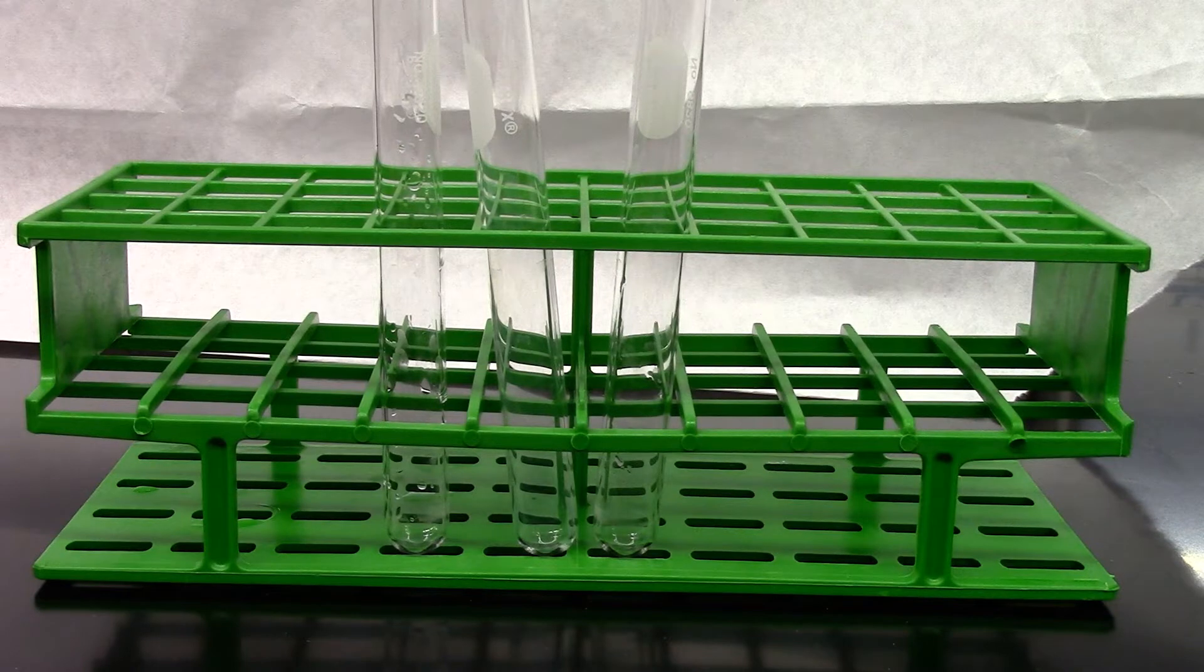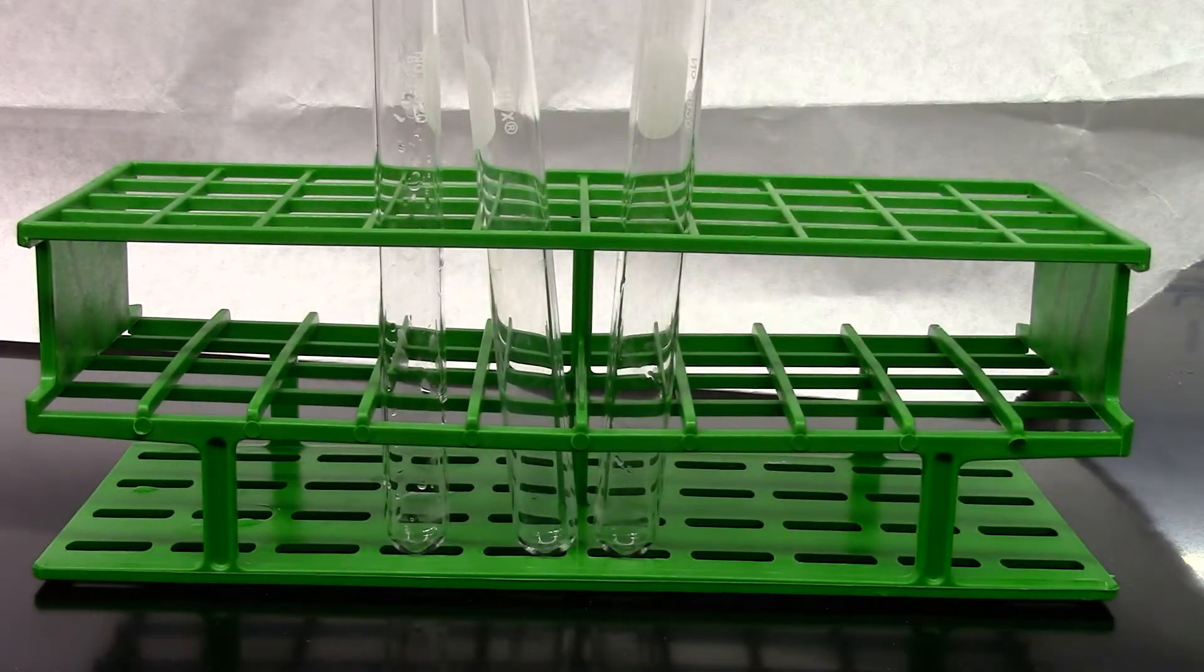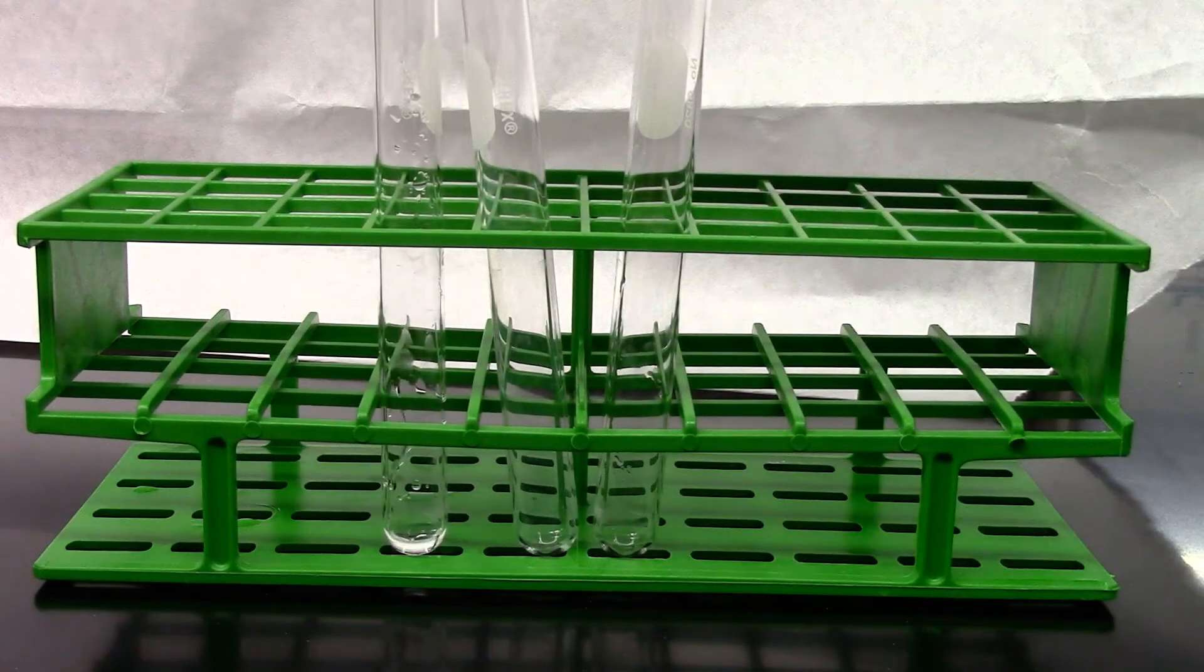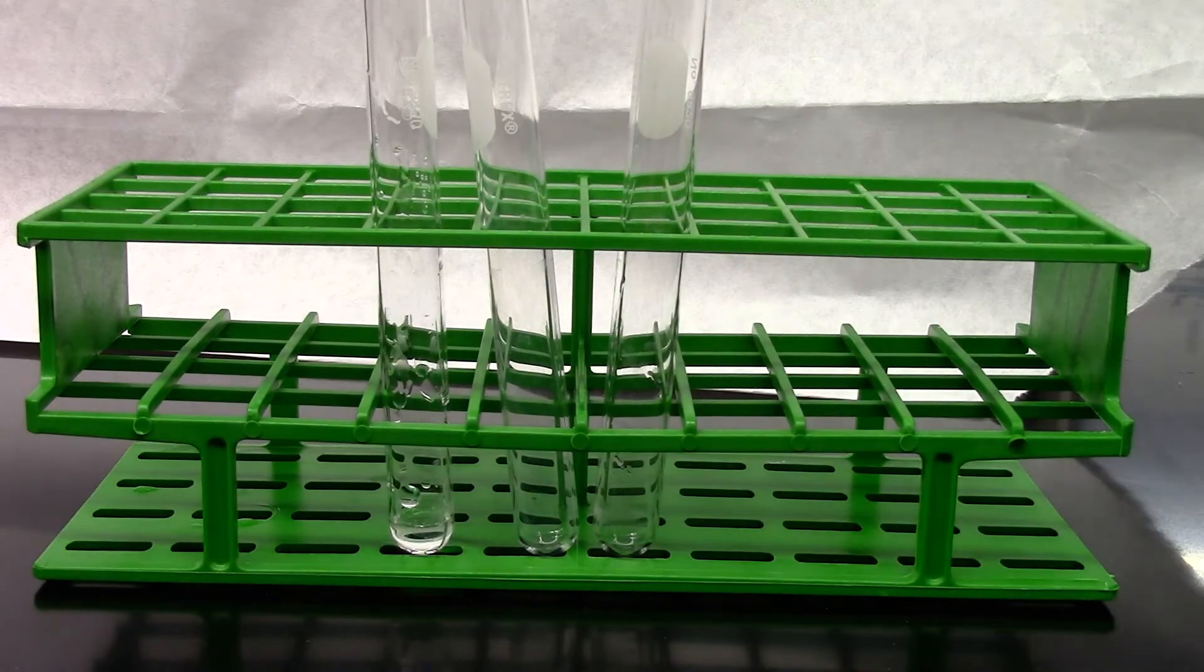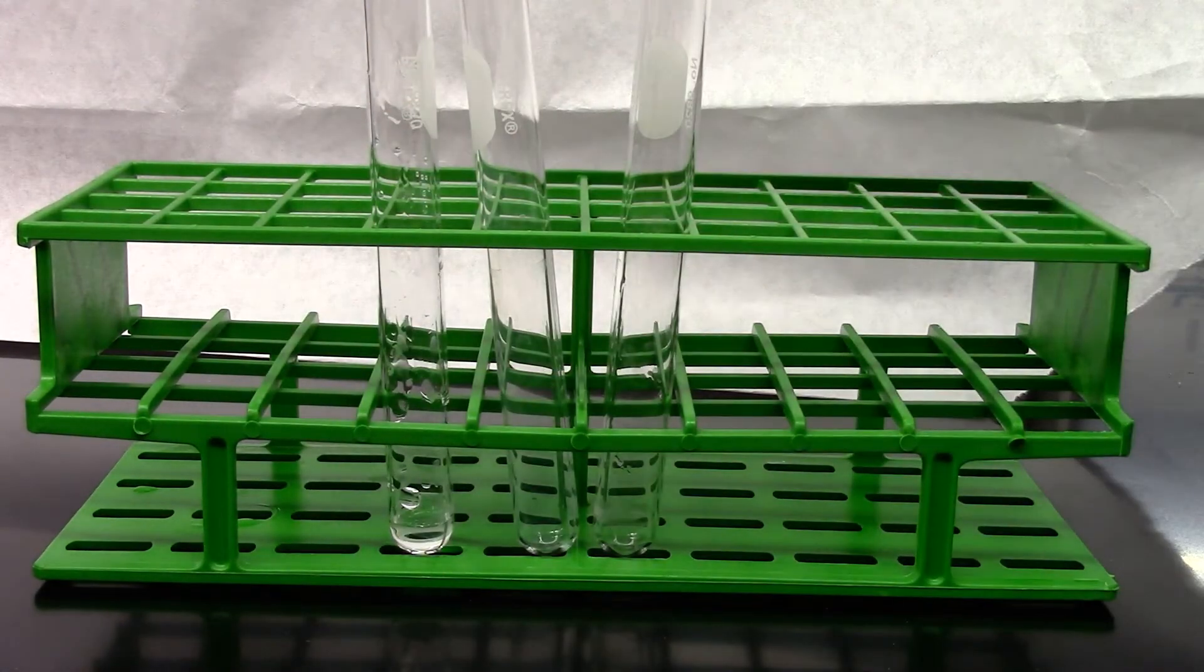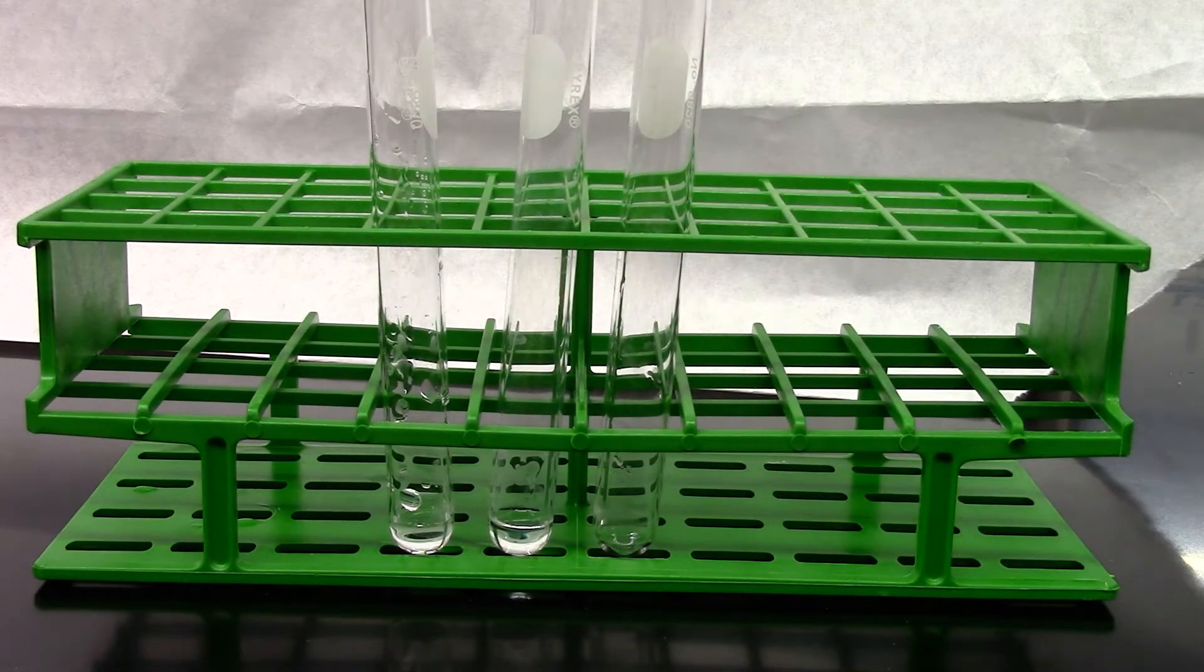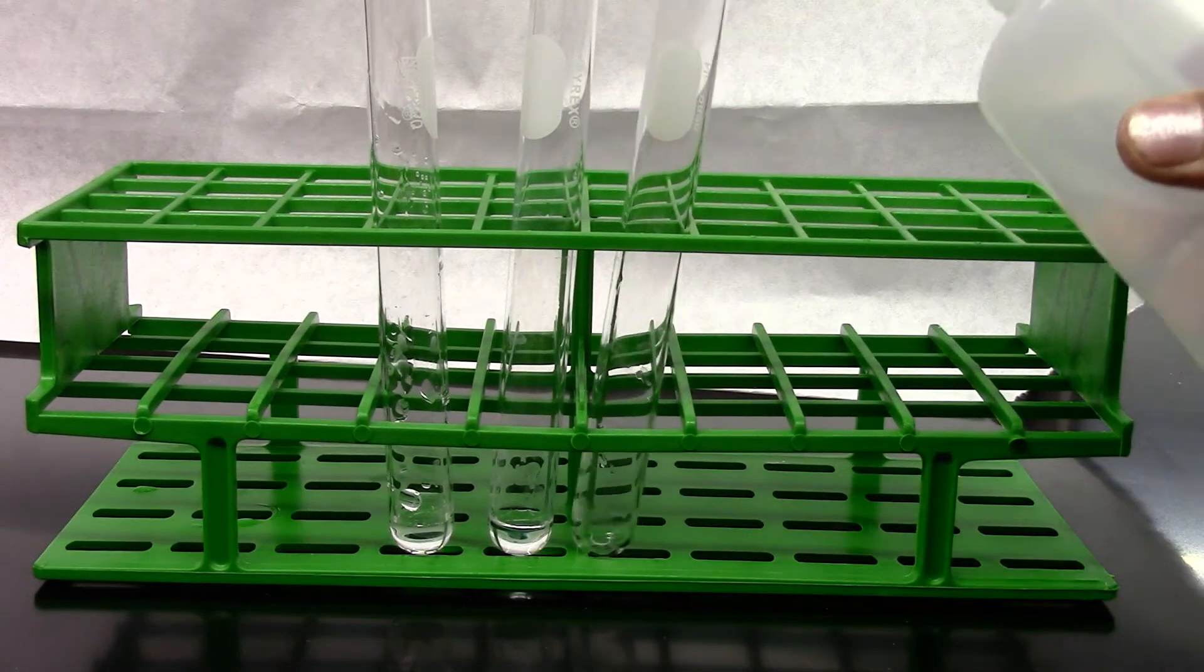So for part C I have three test tubes. The first one I'm going to add 20 drops of silver nitrate. The second test tube I'm going to add 20 drops of dilute hydrochloric acid. The third test tube I'm going to add 20 drops of DI water.